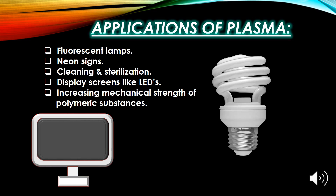In neon signs, the passage of electricity through the gas in the tube produces plasma due to the ionization of the gas, which glows inside the tube. Plasma is also used for the cleaning and sterilization of food material and for the destruction of bacteria, viruses, and fungi. For the removal of harmful or dangerous chemicals and the sterilization of operation theaters, plasma is used.